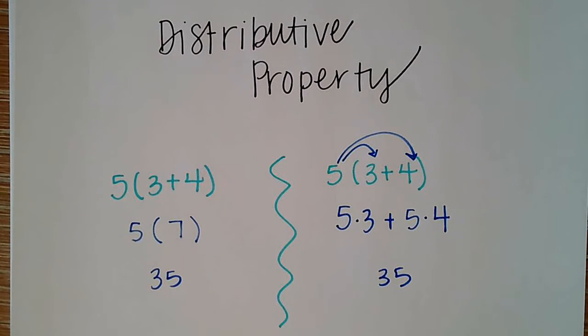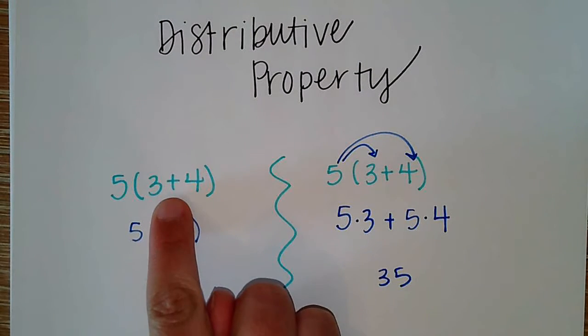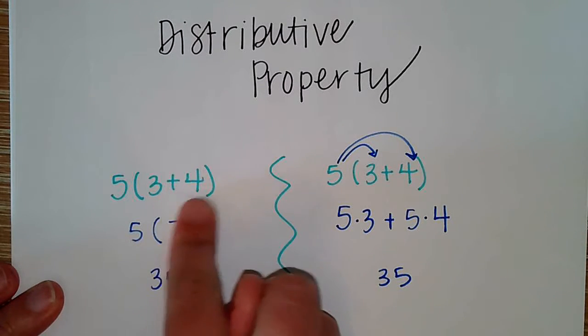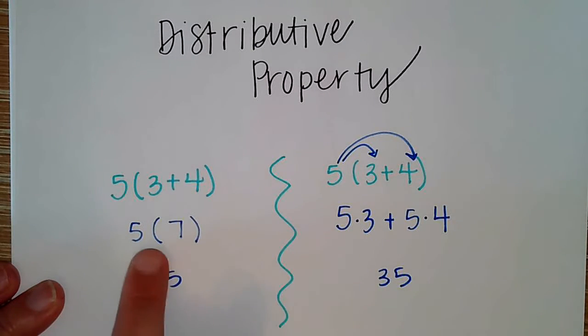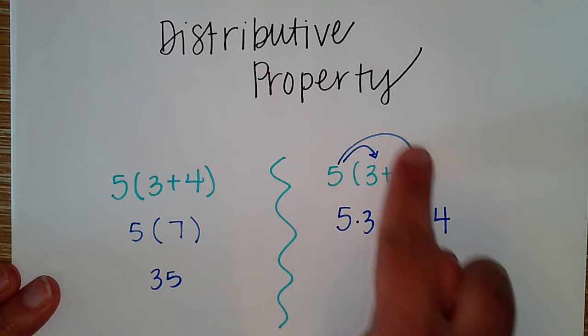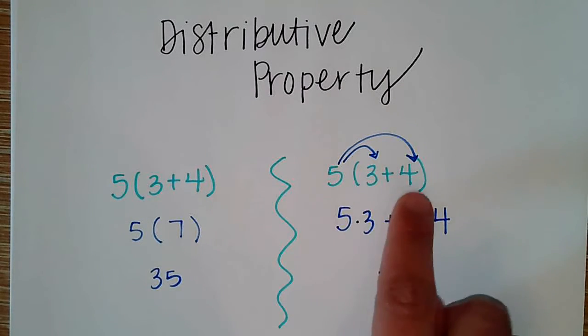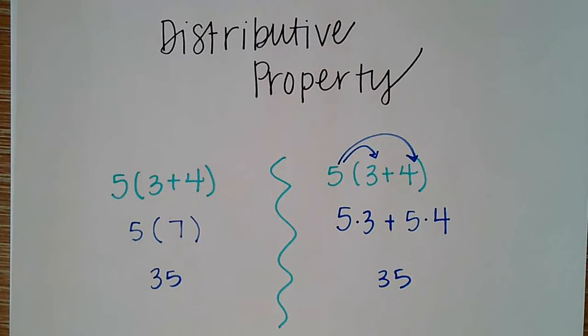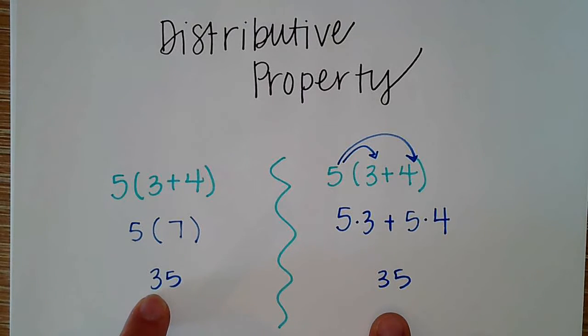I've simplified it down. This one I simply solved for that group and then multiplied it to that outside factor. Here I took that outside factor and distributed it to each part inside my parentheses, still getting the same answer.